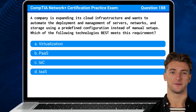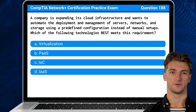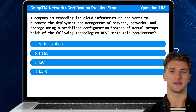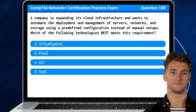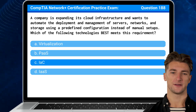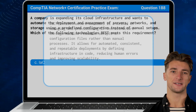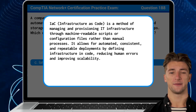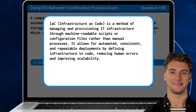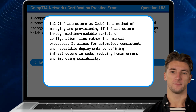Question 188: A company is expanding its cloud infrastructure and wants to automate the deployment and management of servers, networks, and storage using a predefined configuration instead of manual setups. Which of the following technologies best meets this requirement? The answer is C, IaC, or Infrastructure as Code. IaC is a method of managing and provisioning IT infrastructure through machine-readable scripts or configuration files, rather than manual processes. It allows for automated, consistent, and repeatable deployments by defining infrastructure in code, reducing human errors, and improving scalability.